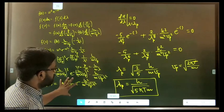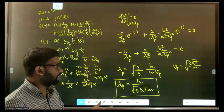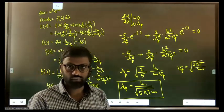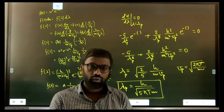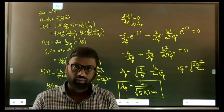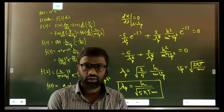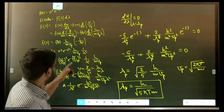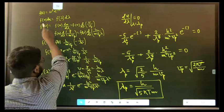This question is exactly similar to finding the most probable energy in kinetic theory of gases, where we also express the distribution function in terms of energy. The same approach is used in blackbody radiation when converting the energy spectral density from frequency to wavelength. So this is not a new concept — whenever you have an expression in terms of u and want to express it in terms of wavelength, you follow this same procedure.